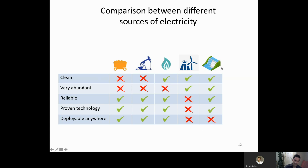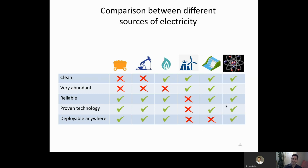Hydro is pretty good — it's clean, abundant, and there will always be water. It's a proven technology; in Quebec we produce almost 100% of electricity from hydro. But unfortunately it cannot be deployed anywhere — you have to be lucky enough to have the right rivers. And finally, as you probably guessed, nuclear energy fits really all the criteria. It's clean, very abundant — we will never run out of uranium. In Ontario we produce 60% of our electricity from nuclear, and France produces 75%. It can be deployed anywhere, just like fossil fuels.